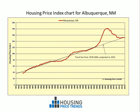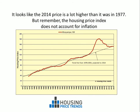Let's look at a chart for example of Albuquerque, New Mexico. We've added a trend line based on data up to 2004 and projected that to 2014. This indicates that for Albuquerque, the Housing Price Index is about where it would have been if the Housing Crisis had not occurred. It looks like the 2014 price is a lot higher than it was in 1977, but remember, the Housing Price Index does not account for inflation.